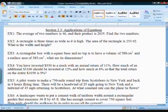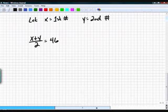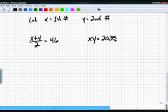The second part of the problem says their product is 2035. What does product mean? When you multiply them, you get 2035. Any questions so far?